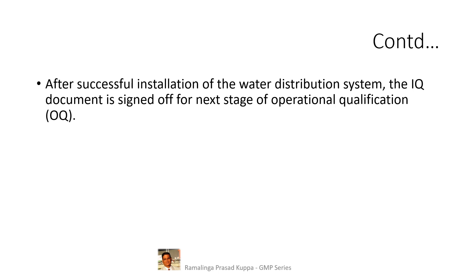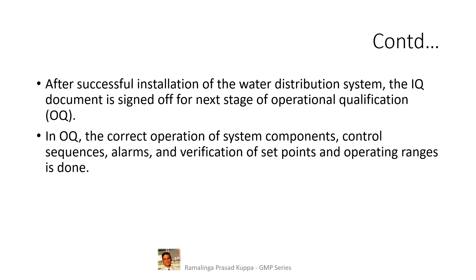After the IQ document is signed off, operate the system to check whether the operation meets the requirements. OQ is mostly operational checks of the system. During this OQ check, certain chemical and microbial parameters may be evaluated for compliance. In OQ, the correct operation of system components, control sequences, alarms, and verification of set points and operating ranges is done. When all these things are done successfully, the OQ document should be signed off.